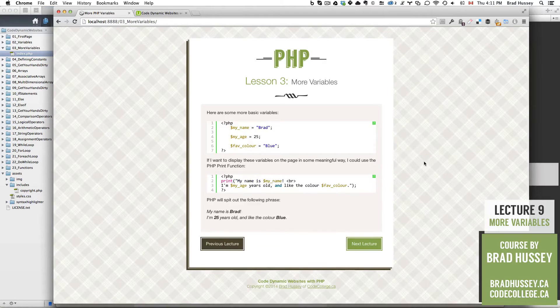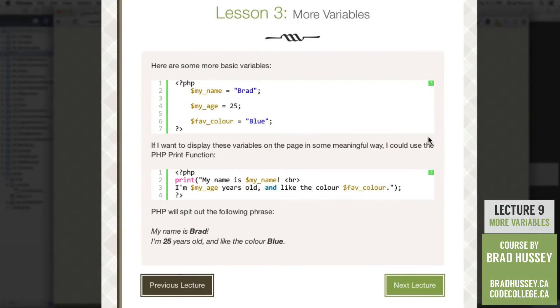All right, so let's jump in. All right, so here are some more examples of some basic variables. So right here, I have my name, or my underscore name equals Brad, and Brad is a string because it's just text, and it's between two double quotation marks. I've ended it with a semicolon, so that I can add another variable below here, which is my underscore age equals, and this one is an integer, so it's just a whole number, 25. And I have another variable here, which is a string, fav underscore color equals blue.